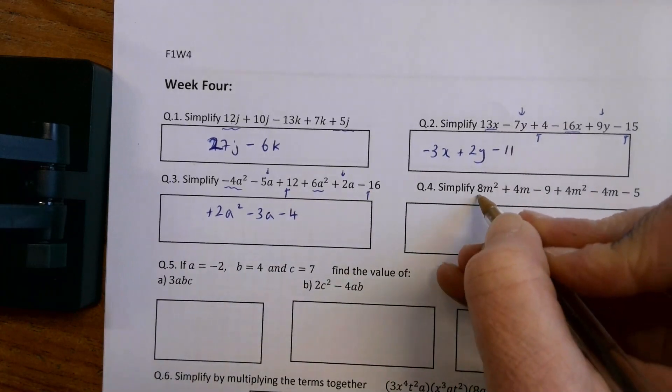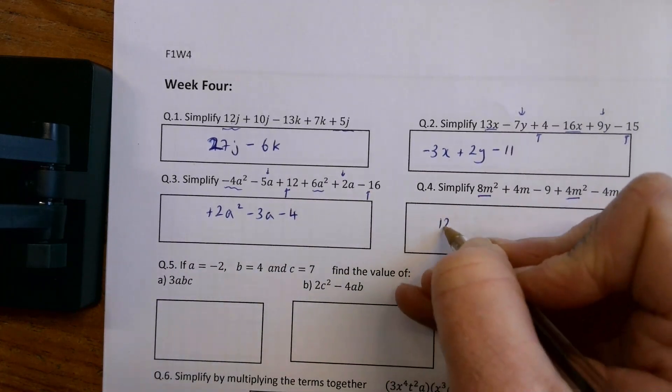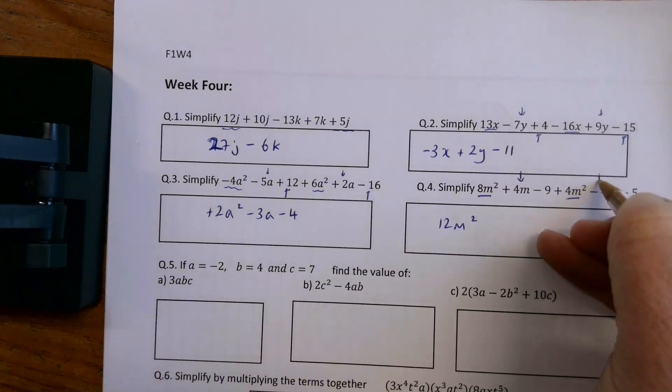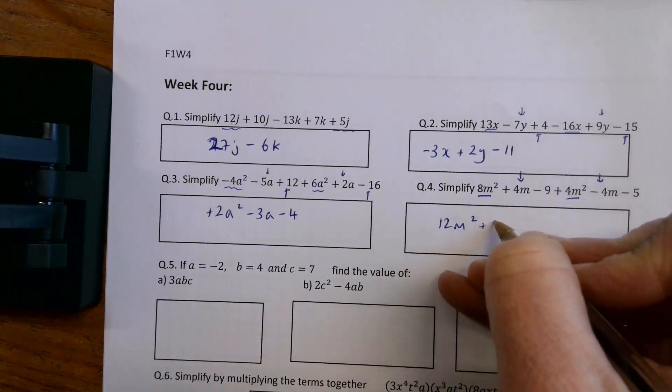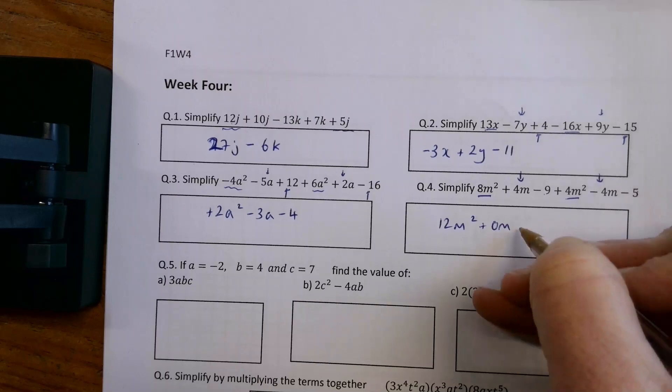Here I have 8M squared and 4M squared is 12M squared, plus 4M and minus 4M is 0M, and minus 9 minus 5 is minus 14. So 12M squared minus 14.